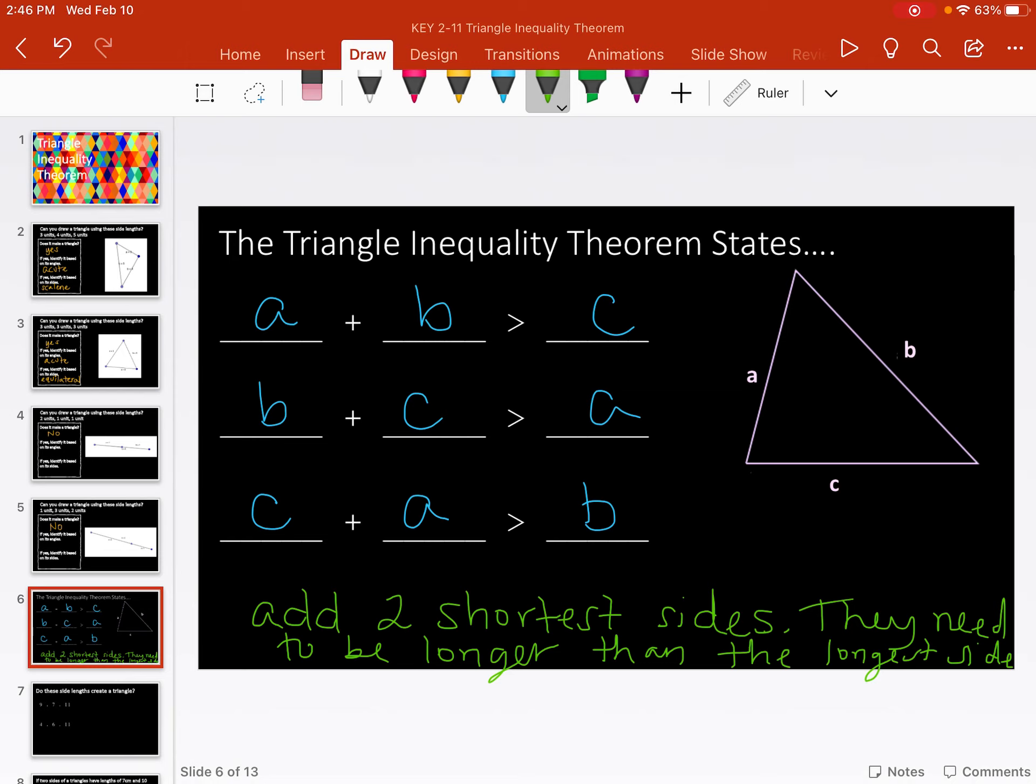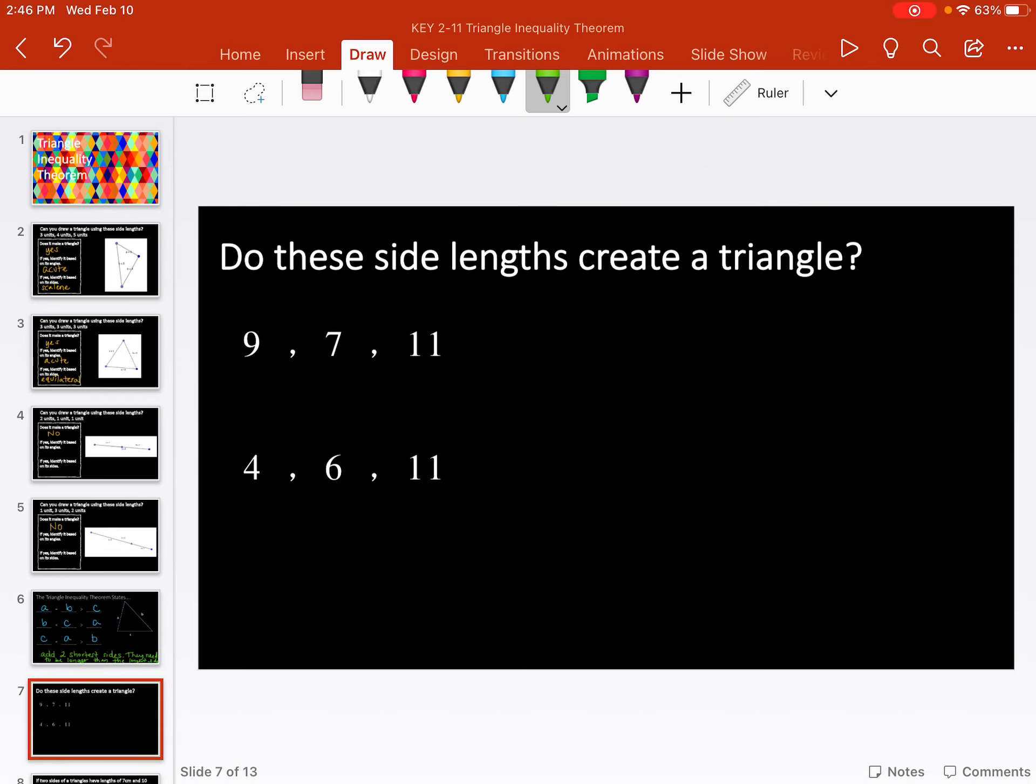So let's go ahead and practice. Without using that little triangle builder or having to try to draw this or anything, we should be able to check and see does this create a triangle? You can plug it in all three ways, do 9 plus 7, do 7 plus 11, do 9 plus 11. Or I'm just going to pick the two shorter sides, which would be 9 and 7. I'm going to add those and make sure they are greater than the third side. So 9 plus 7 should be greater than 11. Well, 9 plus 7 is 16. 16 is greater than 11. So yes, this does work. Yes, it can create a triangle.